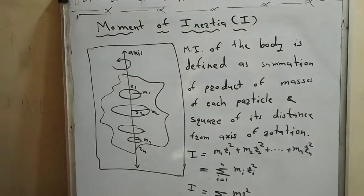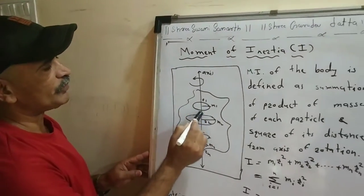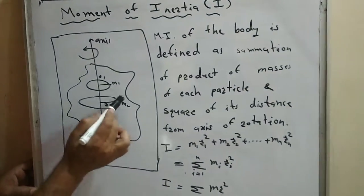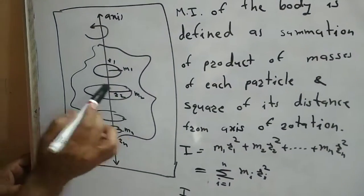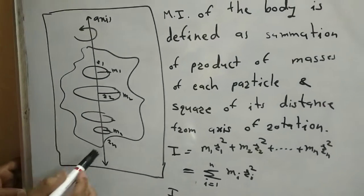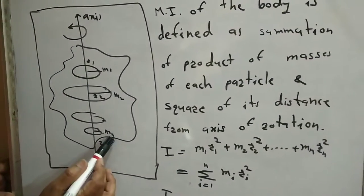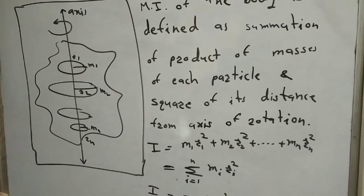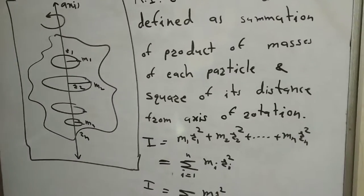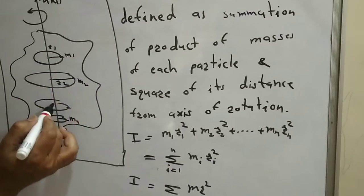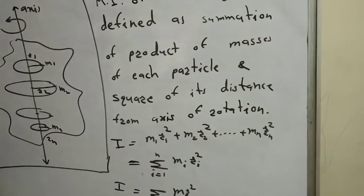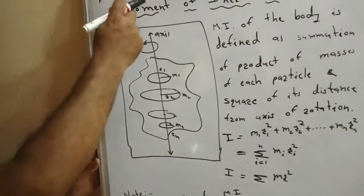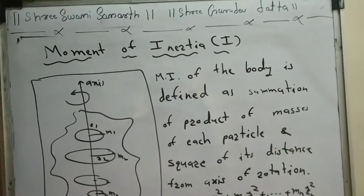This particle M1 is moving along the circumference of a circle of radius R1. M2, the second particle, is moving along the circumference of a different circle of radius R2. Similarly, the Nth particle of mass Mn is revolving along the circumference of a circle of radius Rn. The important thing is that the centers of all these circles lie on a single straight line, which is called the axis of rotation.